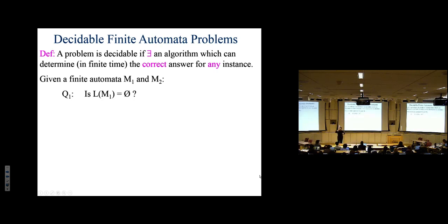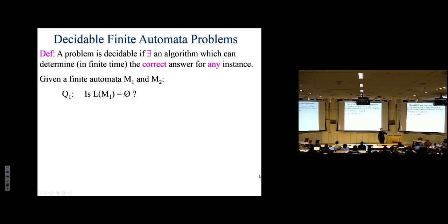You can have final states with edges into them that are still not reachable from the beginning state — like dead code in a program that's never called. So just having final states and edges into them isn't sufficient. Refine the algorithm: you need final states, edges into final states, and reachability from the start state.